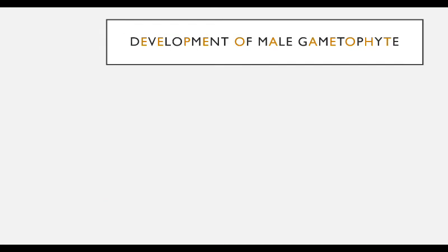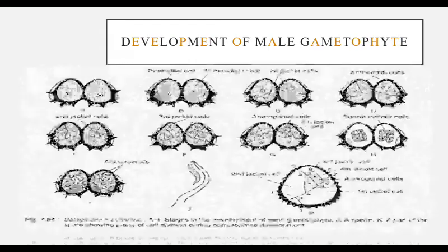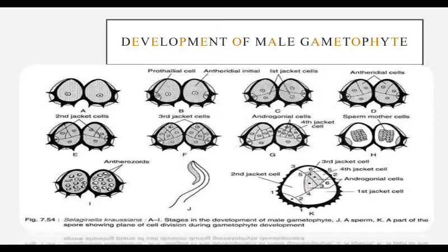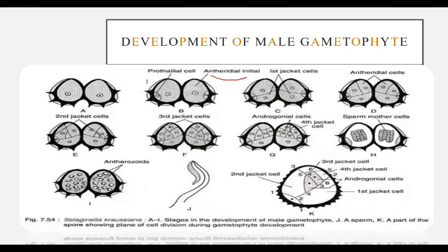Development of male gametophyte: it starts from the microspore. The first unequal division occurs and we get a sterile prothallial cell and an antheridial initial. The sterile prothallial cell undergoes no further division; all remaining divisions are confined to the antheridial cell.